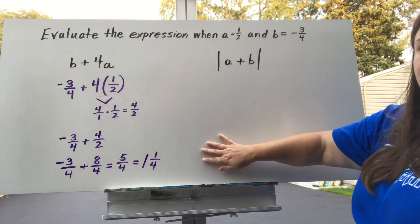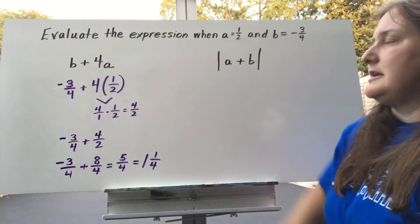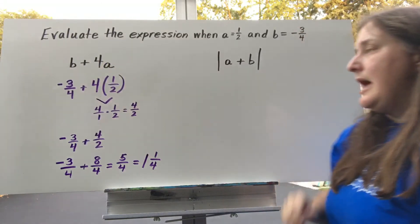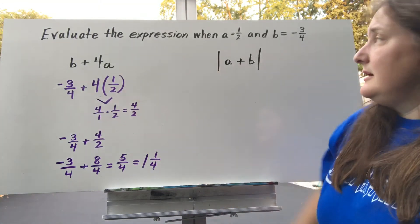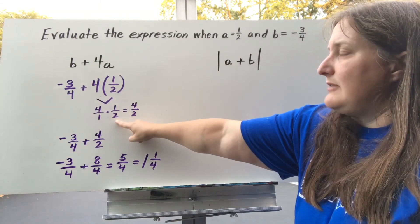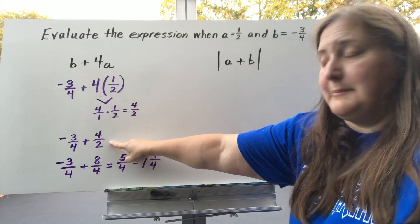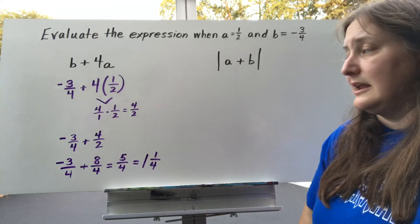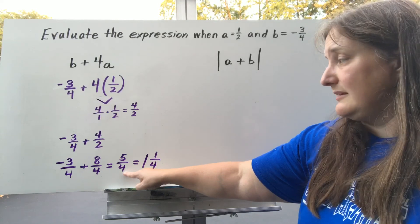Let's try some expression problems. We're evaluating the expression when a equals 1 half and b equals negative 3 fourths. The expression is b plus 4a. When I see a number and variable written next to each other with no operation symbol between them, I'm multiplying them. Following order of operations, multiplication goes first. I substitute: b is negative 3 fourths and a is 1 half. I turn 4 into 4 over 1 times 1 half, which gives me 4 halves. Now I add negative 3 fourths. I double the denominator of 4 halves to get 8 fourths. Negative 3 plus 8 is 5, so I have 5 fourths, which as a mixed number is 1 and 1 fourth.